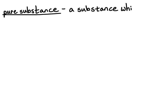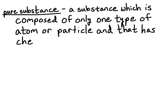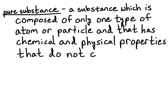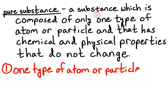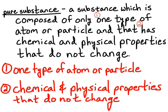A pure substance is a substance which is composed of only one type of atom or particle, and that has chemical and physical properties that do not change. There are two parts to this definition. The first part says one type of atom or particle — pure substances are made up of just one type of atom or particle. The second part is that pure substances have chemical and physical properties that do not change. To understand pure substances, the easiest thing to focus on is that pure substances are made of just one type of atom or particle.